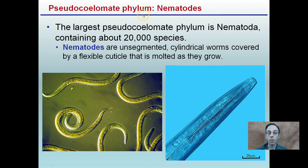Within the pseudocoelomate phylum, we have nematodes — the largest number of species within this phylum. They're unsegmented, cylindrical worms covered by a flexible cuticle that is molted as they grow; they are animals that molt. They're very small and can live in different environments, particularly soil environments or within plants. You might be more familiar with these than you actually realize.